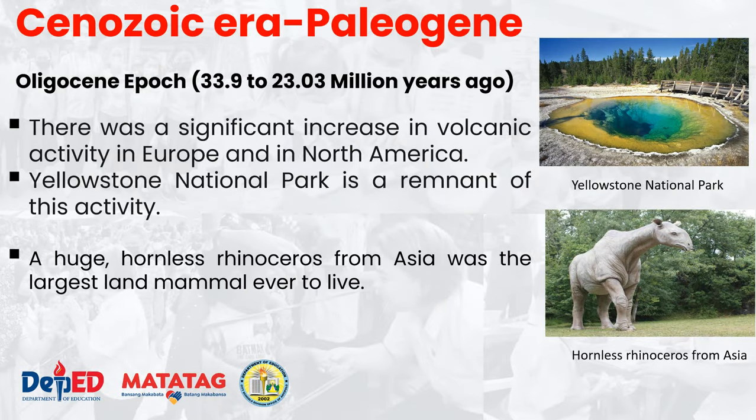During the Oligocene epoch, there was a significant increase in volcanic activity, especially in Europe and North America — one example being Yellowstone National Park as a remnant of this activity. The hornless rhinoceros from Asia was the largest land mammal ever to live during the Oligocene epoch.